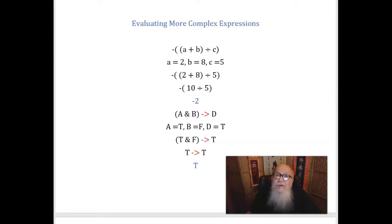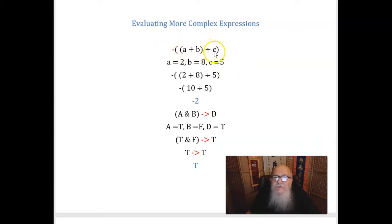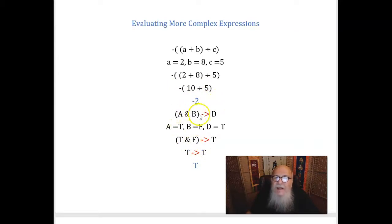We can also learn to evaluate more complex expressions — similar to what we did in math. Suppose you had not (A plus B) divided by C, and your teacher told you A is 2, B is 8, and C is 5. You'd plug in the numbers and do what's in the innermost parentheses first: 2 plus 8 is 10, then 10 divided by 5 is 2, and then the negation operates on it and gives us negative 2. Similarly in logic, suppose we have 'if (A and B), then D.' We always identify the major operator first — this is a conditional, with a conjunction in the antecedent.